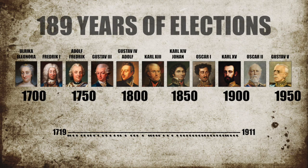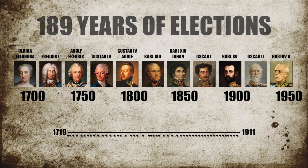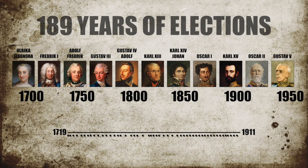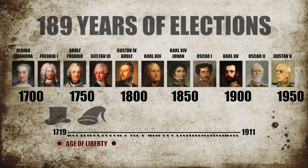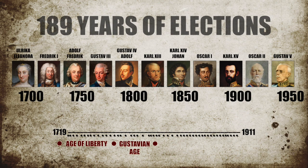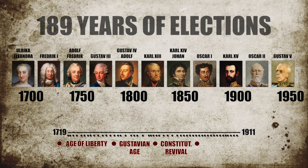We can subdivide this long era into four distinct periods corresponding to big structural changes in Swedish political history. In the first period, the Age of Liberty, kings were relatively weak and there was a lot of competition between two main parties, the Hats and the Caps. In the Gustavian Age, parties were banned and only five parliamentary sessions were convened in almost 40 years. In the third period, royal power is reined in by a new constitution demanding parliaments be summoned at least every five years. The fourth period is characterized by reforms leading up to a modern electoral system.